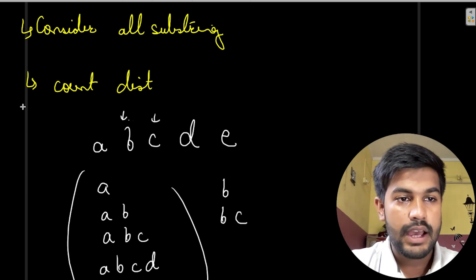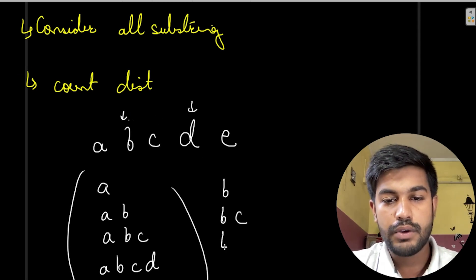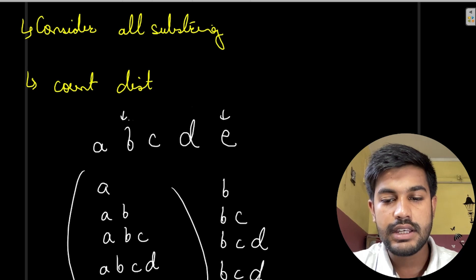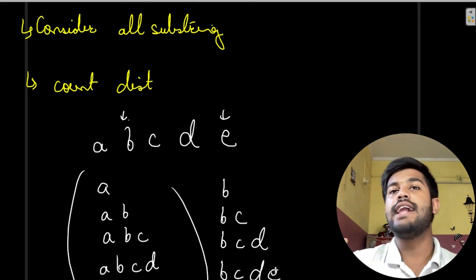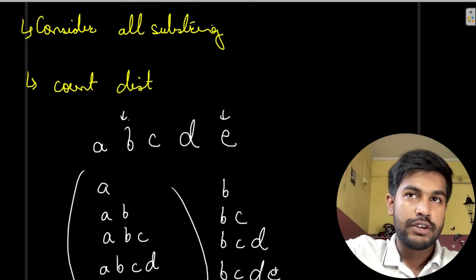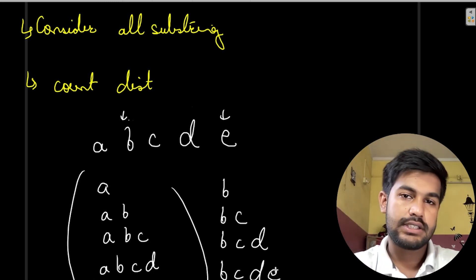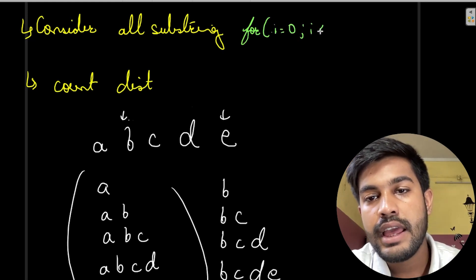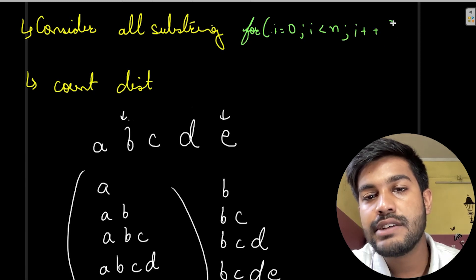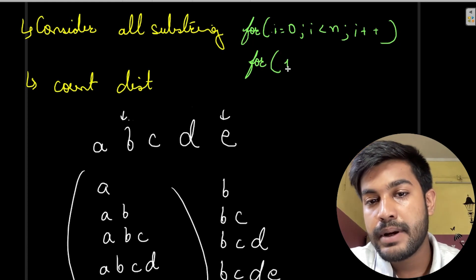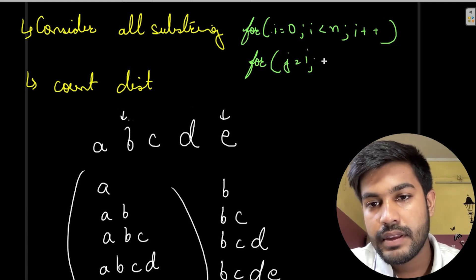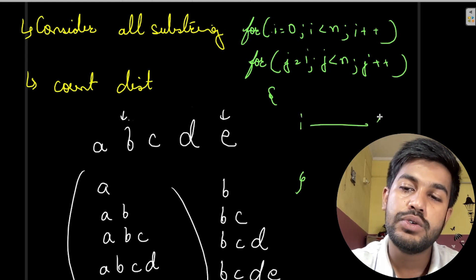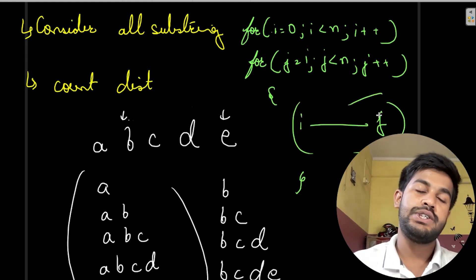We continue for each starting character — for 'b' we get 'b', 'bc', 'bcd', 'bcde', and so on. The for loop structure is: for i from 0 to n, and for j from i to n, j++. By iterating i to j we consider all substrings. The time complexity of finding all substrings is O(n²).